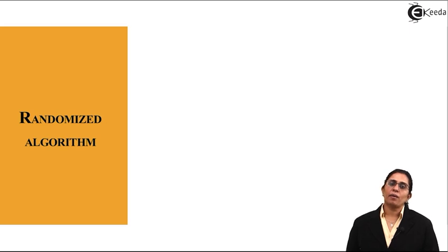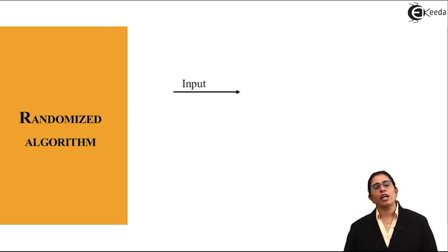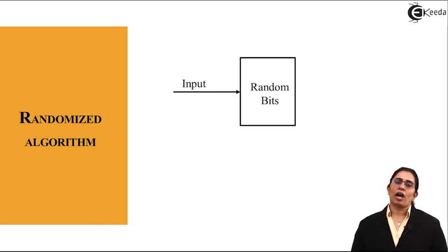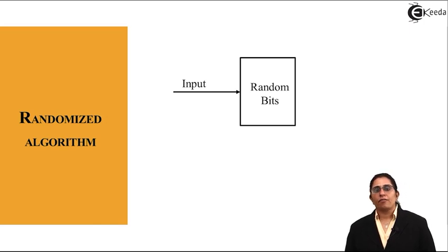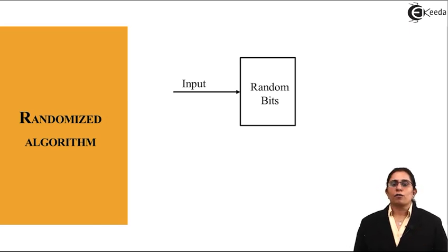Now what happens in a randomized algorithm? We have the input but in the algorithm part we introduce something known as a random bit. Random bit is a bit which is generated by itself by an algorithm which is designed to produce random numbers or random inputs.